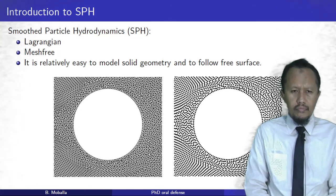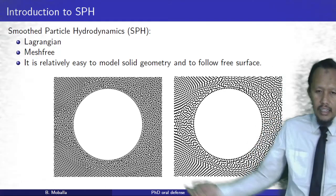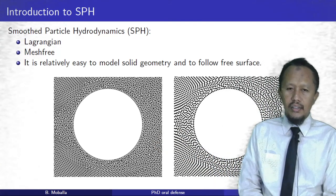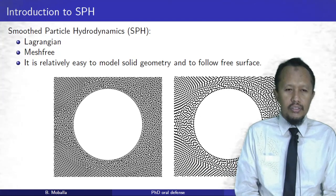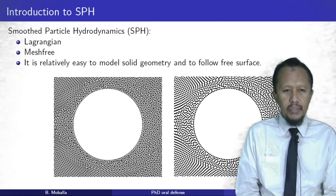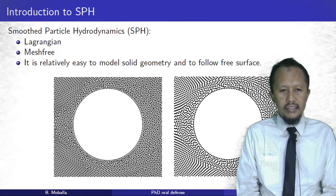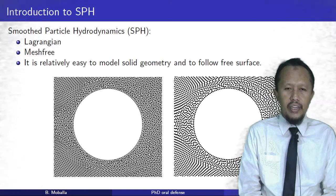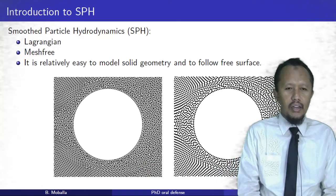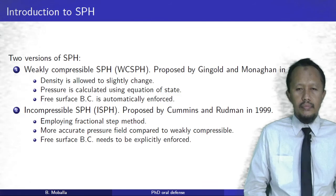In SPH, we discretize the continuum into a set of particles. The main difference between SPH and grid-based methods is that in grid-based methods the mesh represents connections between computational points or volumes, whereas in SPH we do not store any information about connections between computational points. In grid-based methods, the mesh is generally stationary, representing an Eulerian approach, while in SPH the particles are moving, representing a Lagrangian approach.